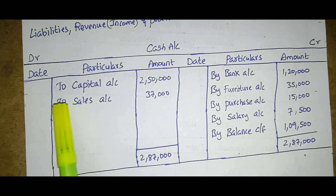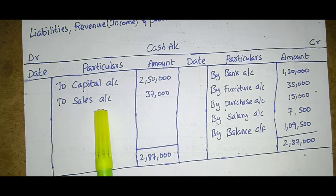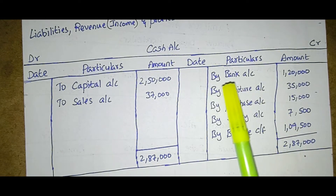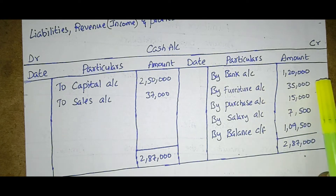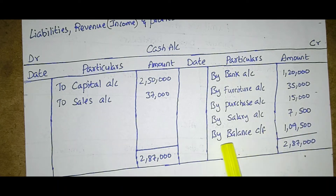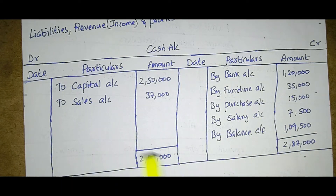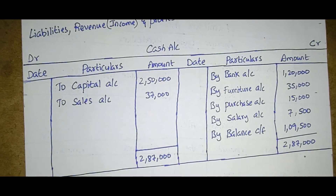For the cash account: on the debit side — to capital account two lakhs fifty thousand, to sales account thirty-seven thousand; total two lakhs eighty-seven thousand. On the credit side — by bank account one lakh twenty thousand, by furniture thirty-five thousand, by purchases fifteen thousand, by salary seven thousand five hundred, by balance carried forward one lakh nine thousand five hundred. Total both sides equal two lakhs eighty-seven thousand. In the ledger, use 'by' on the credit side and 'to' on the debit side.